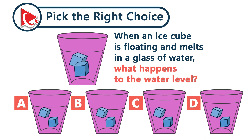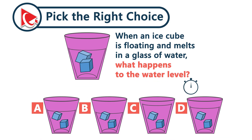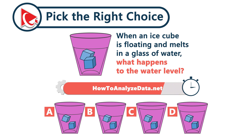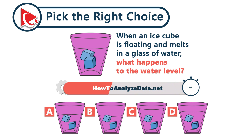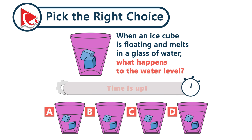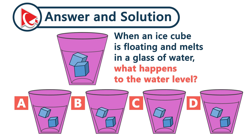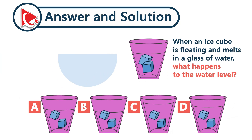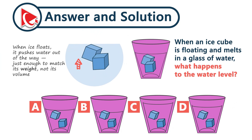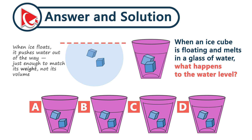What happens to the water level when a floating ice cube melts in a glass of water? When ice floats, it pushes water out of the way — just enough to match its weight, but not its volume. That's the key. Ice takes up exactly the space it had originally displaced. So the water level stays the same. The correct answer is choice A.